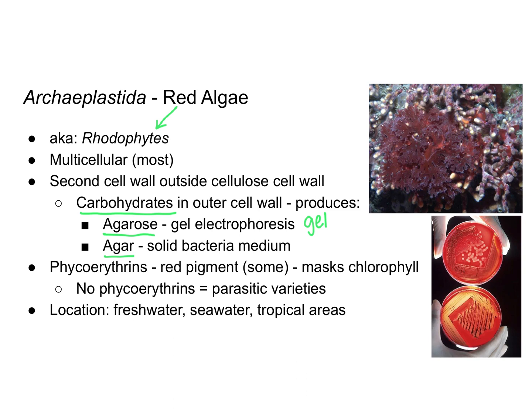Gel electrophoresis is used for things like DNA fingerprinting. Agar is the solid bacteria medium that can be mixed with different nutrients and conditions in order to culture bacteria on a petri dish in a lab. The red color of red algae comes from red pigments known as phycoerythrins, so the red algae can perform photosynthesis but don't appear green because the red pigment takes over the green pigment of the chloroplast. Some red algae that lack phycoerythrins are actually parasitic. Red algae can be found in freshwater or saltwater and are typically found in tropical areas.